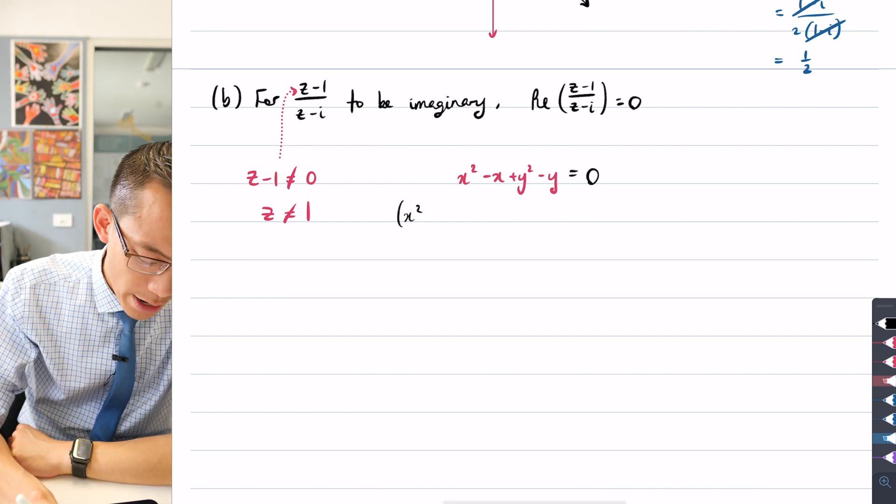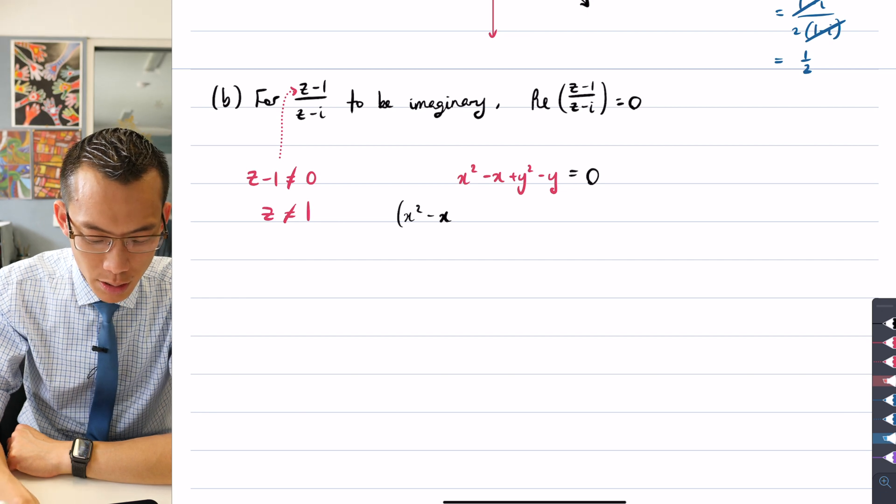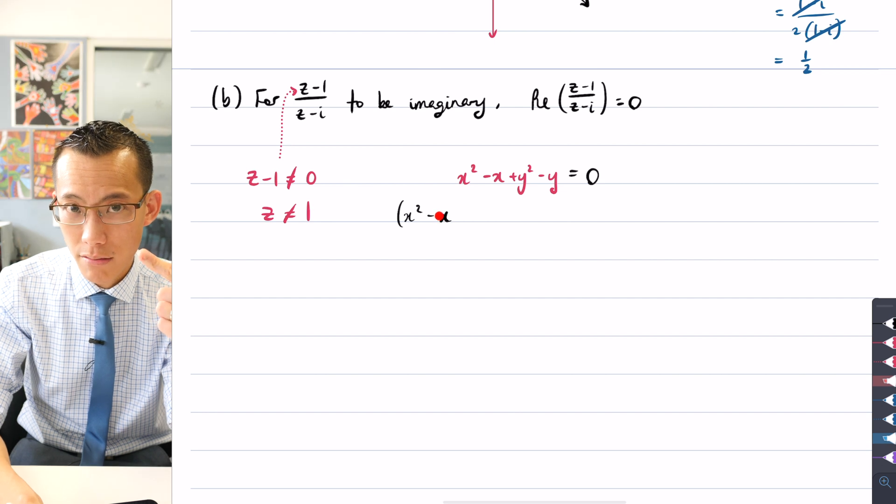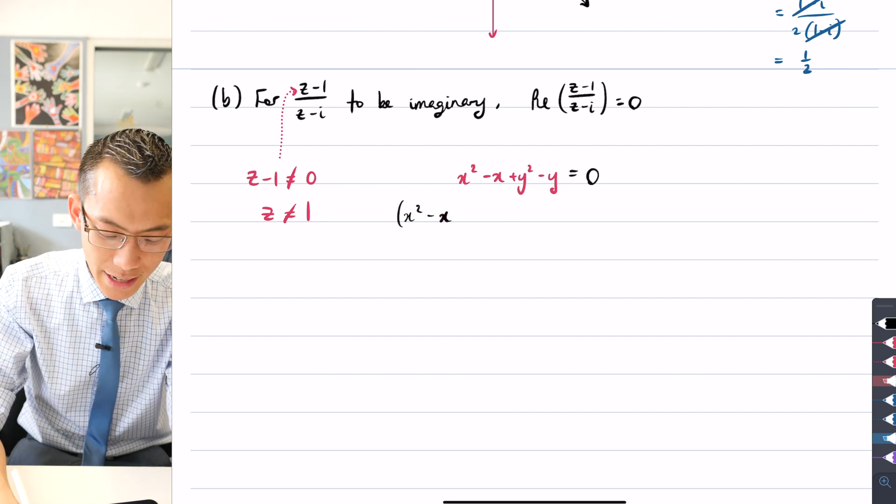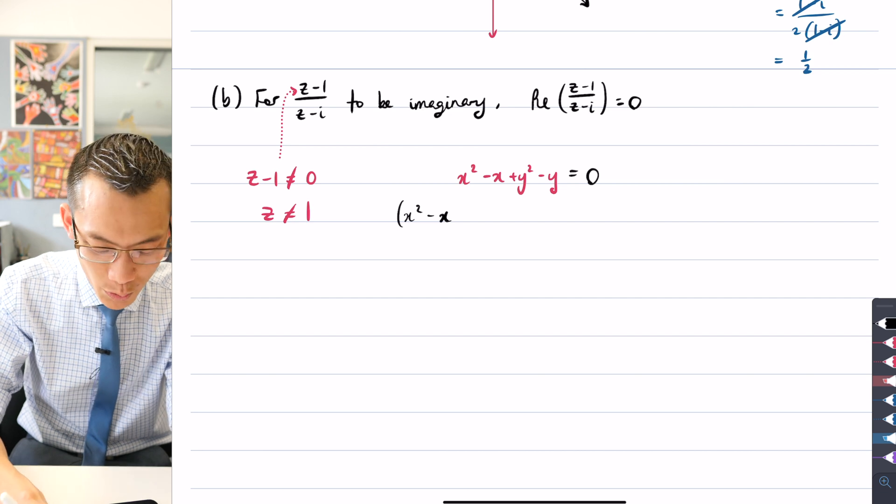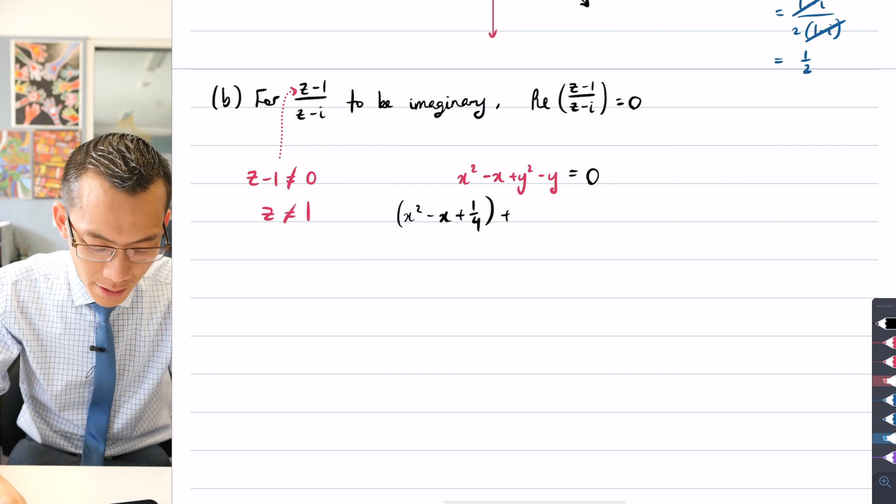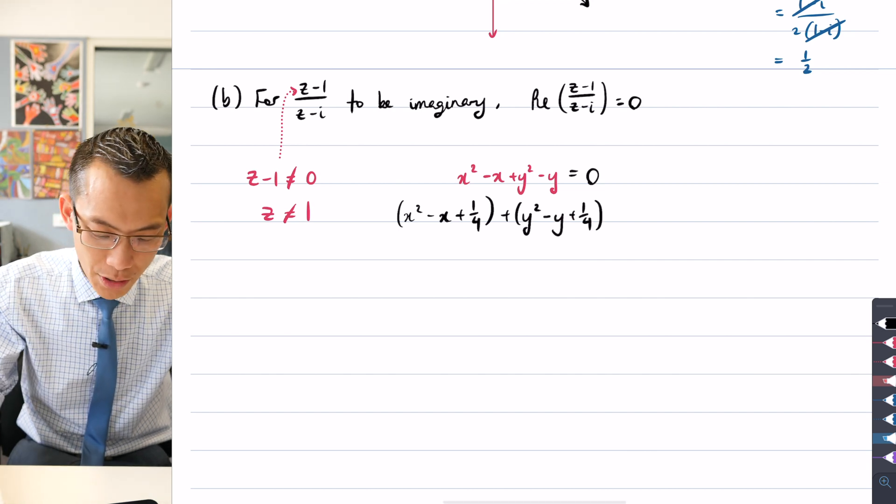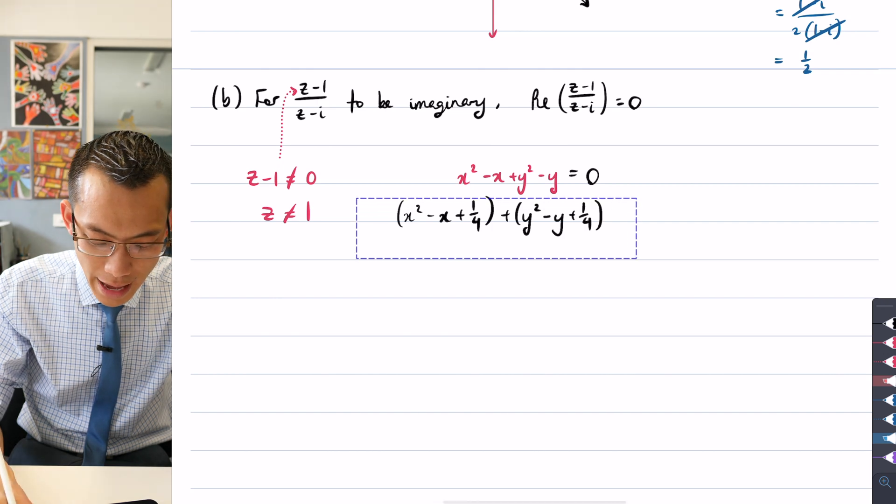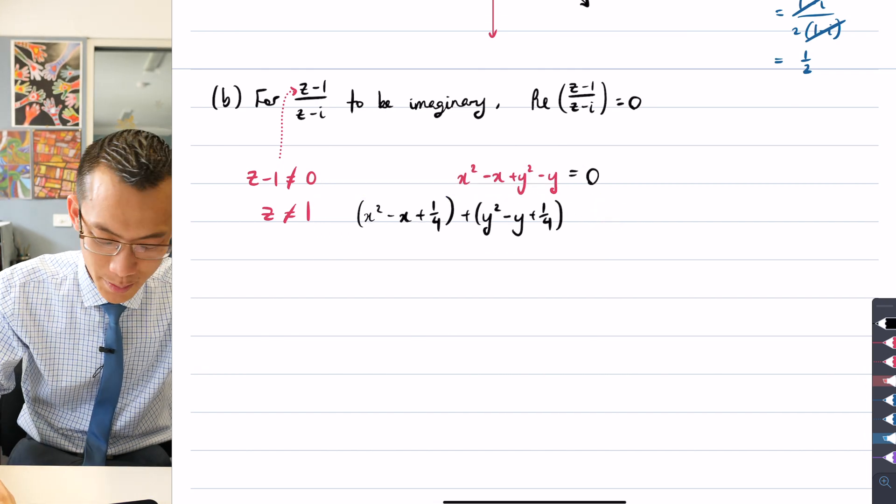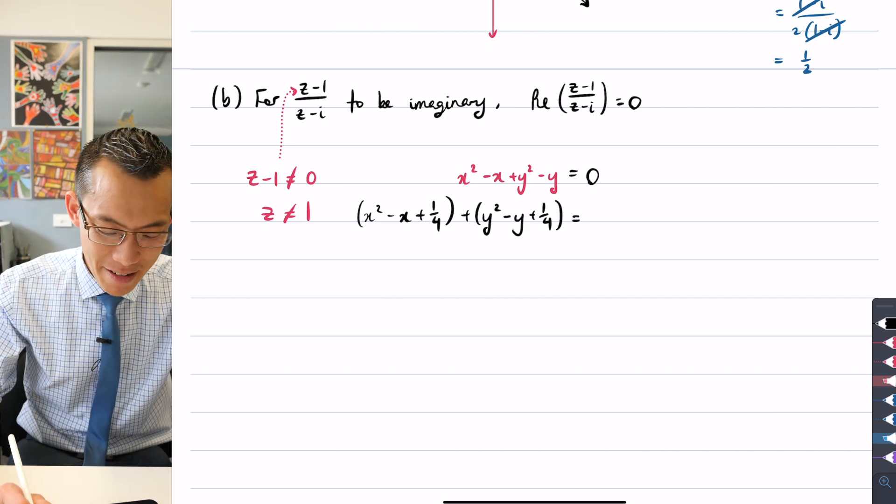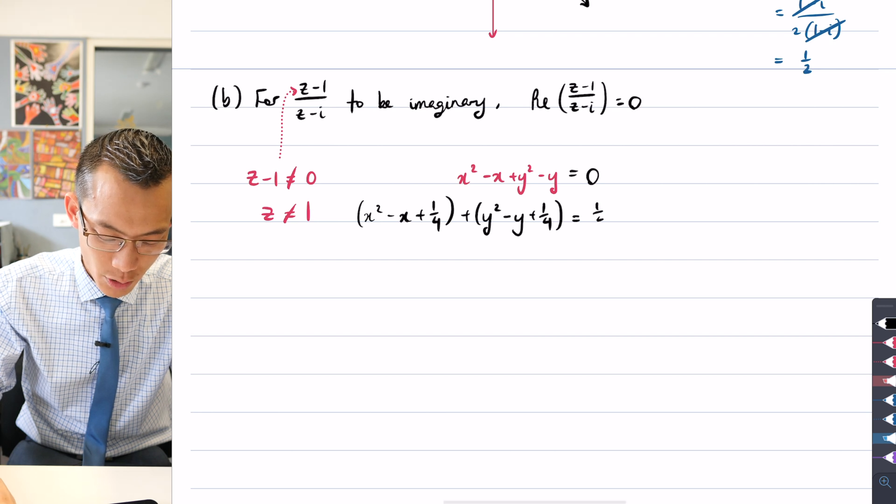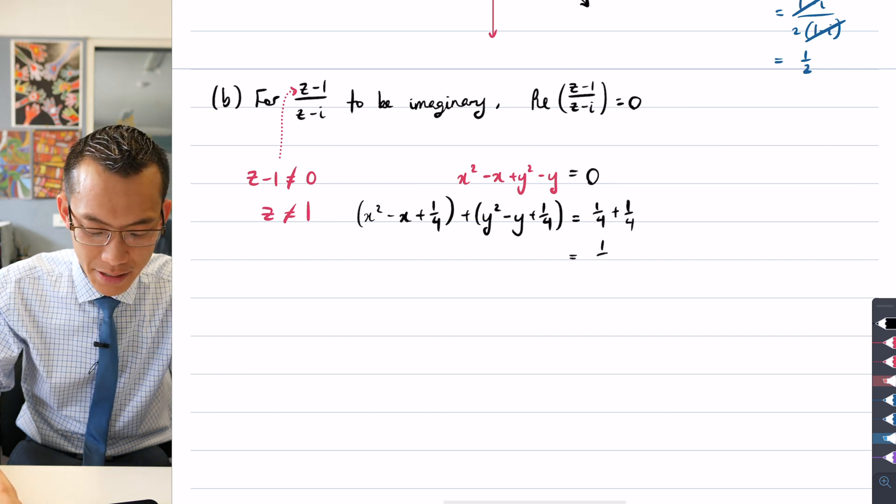If I gather x squared minus x, to complete the square on this term, I have to take this coefficient which is negative 1, I have to halve it and square it. Halve and square. So when you halve it, you get negative 1 half and when you square it, you get a quarter. You do the same thing for the y's. Because you added a quarter to the x terms and you added a quarter to the y terms, you're going to have to add it to the right hand side as well. So a quarter plus a quarter, I might as well write that and simplify on the next line as a half.